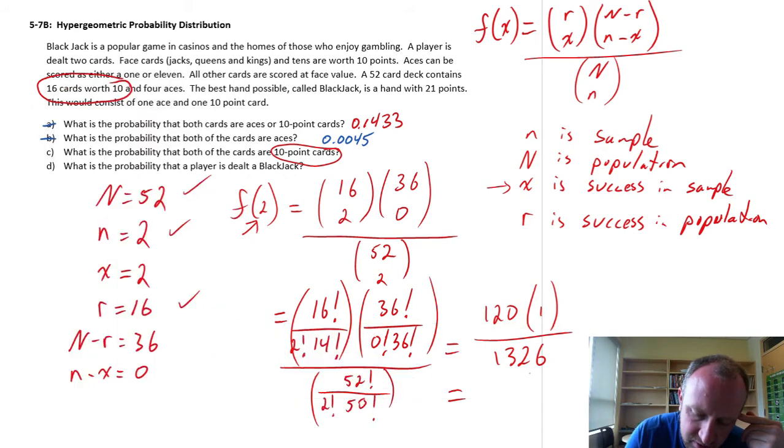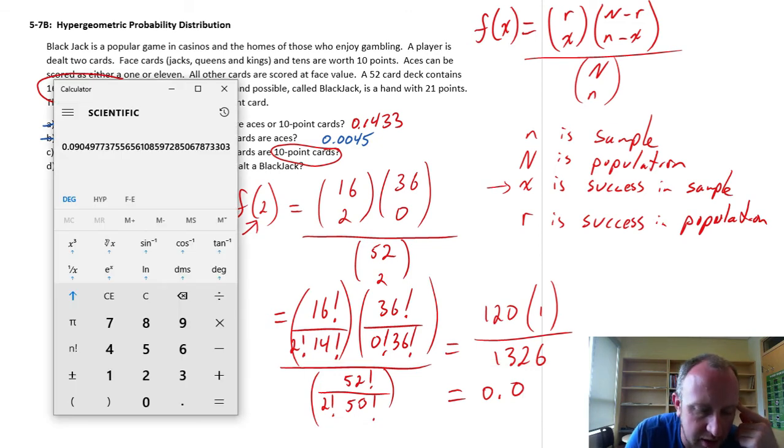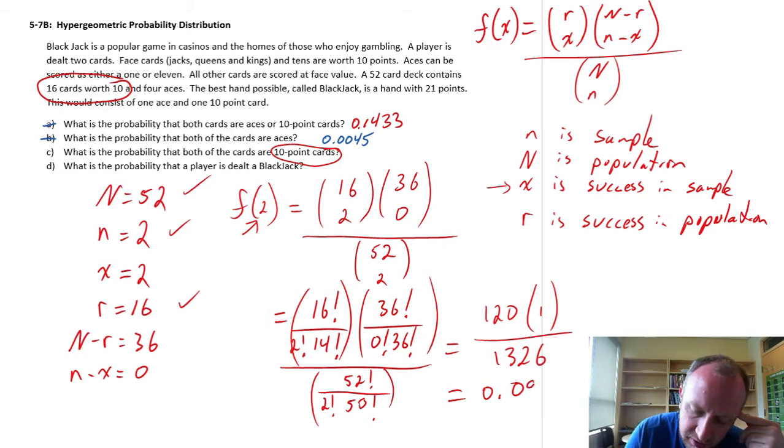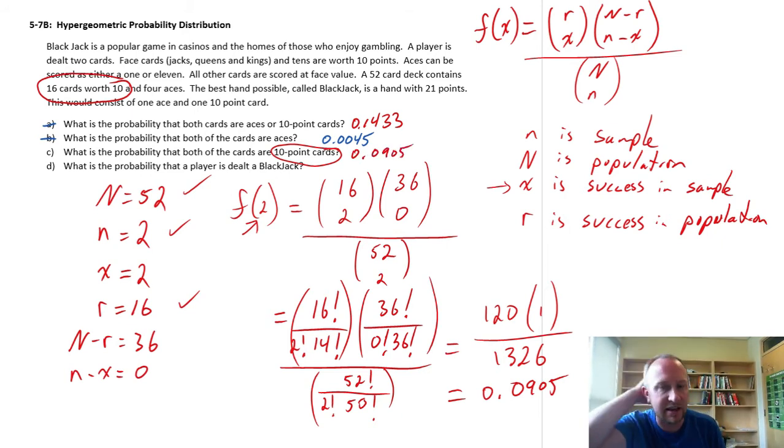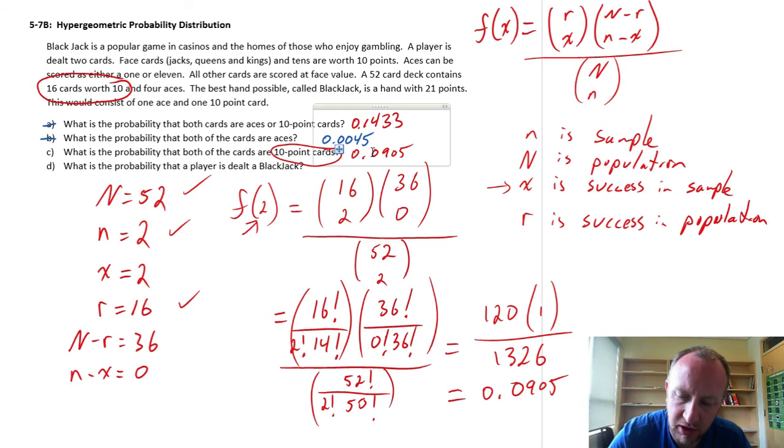So the answer is 0.0905, let's keep it to 4 decimals, 0.0905, so there's our final answer for part C, 0.0905. So that gives me the probability then that I draw two of those cards, and they're both 10-point cards, so either a face card or a card with 10 on it. Now, so we have all of these probabilities, the next part D.